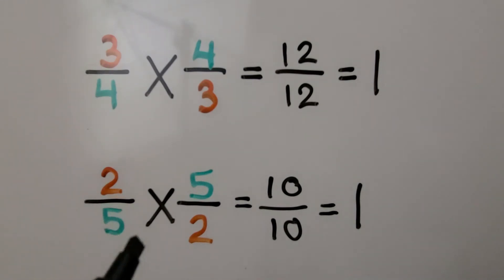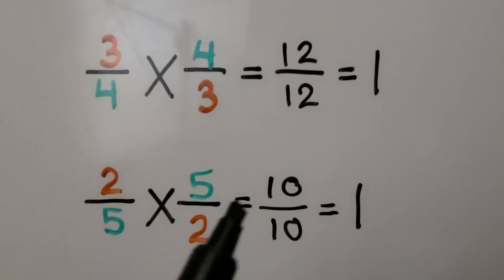Here we have 2/5. We flip it upside-down to have 5 halves. We multiply straight across, we get 10/10, which is equal to 1 whole. We know the reciprocal of 2/5 is 5 halves.